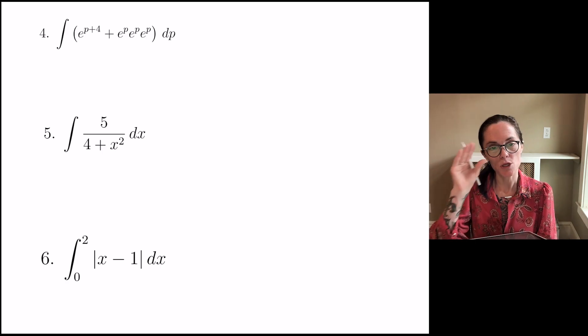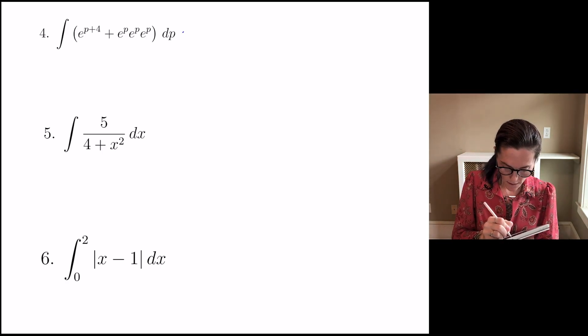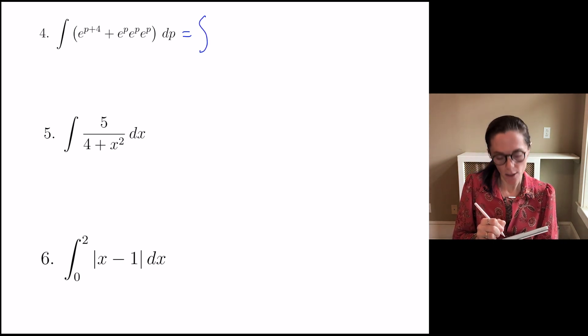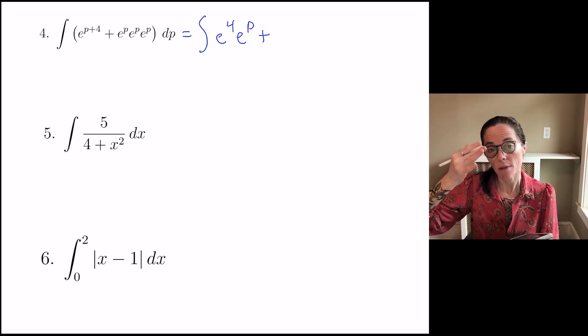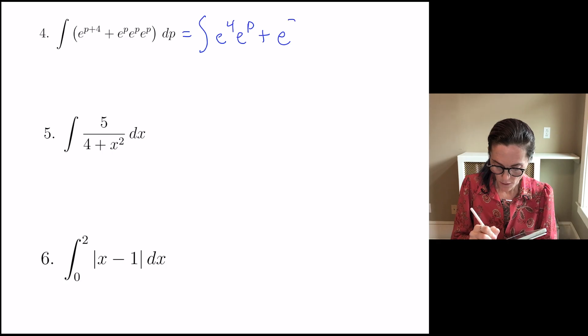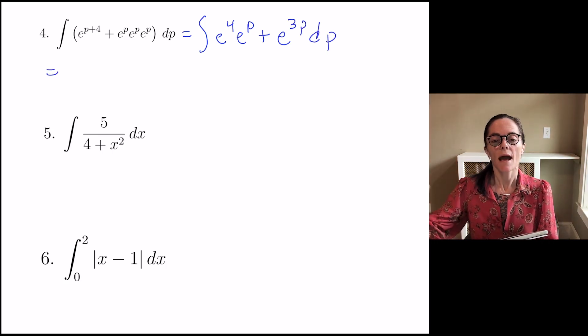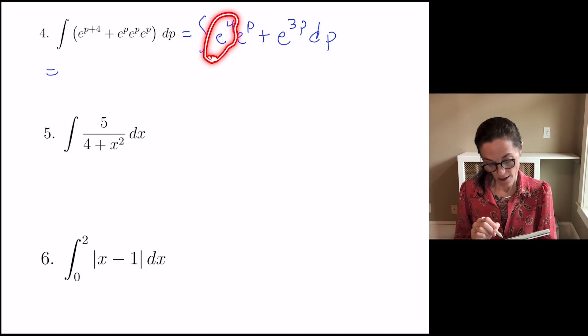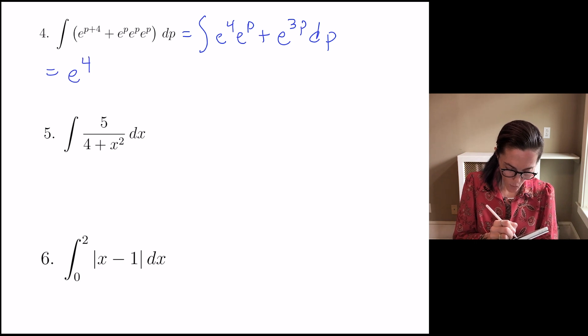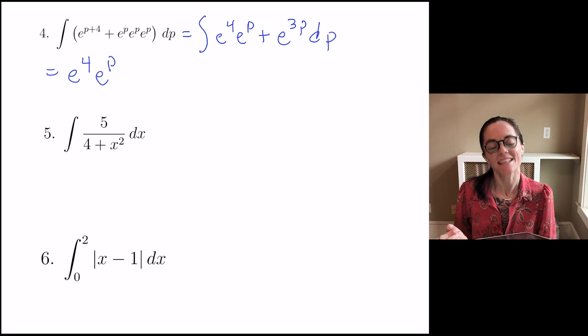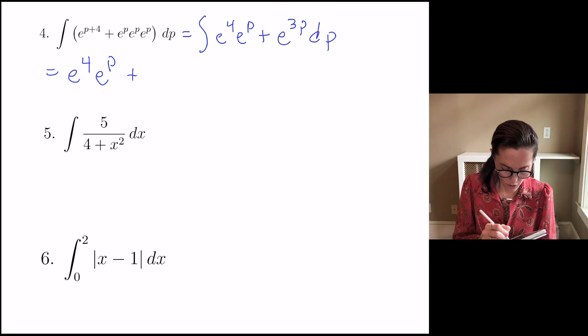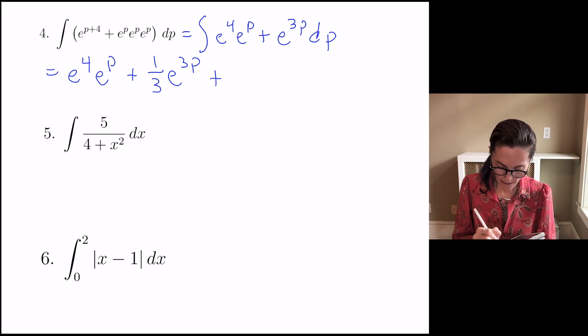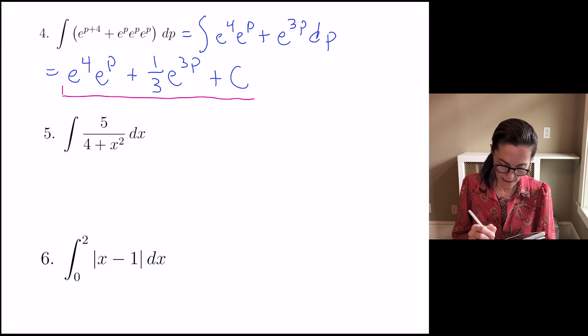Number 4. This is a pretty short question. Let's see, I'm going to use some properties of exponents. The first term I can write as e to the 4 times e to the p. The second term we can write as e to the p plus p plus p, which is also known as e to the 3p, and dp. So now we have a constant, e to the 4 is a constant times e to the p. So write down the constant and then we integrate e to the p with respect to p, which is e to the p. Next one, I mentioned this was coming. We have e to the 3p. When we integrate e to the 3p with respect to p, we get a 1 over 3 e to the 3p. And finally, this is an indefinite integral, and so we have the plus c. This was pretty short.